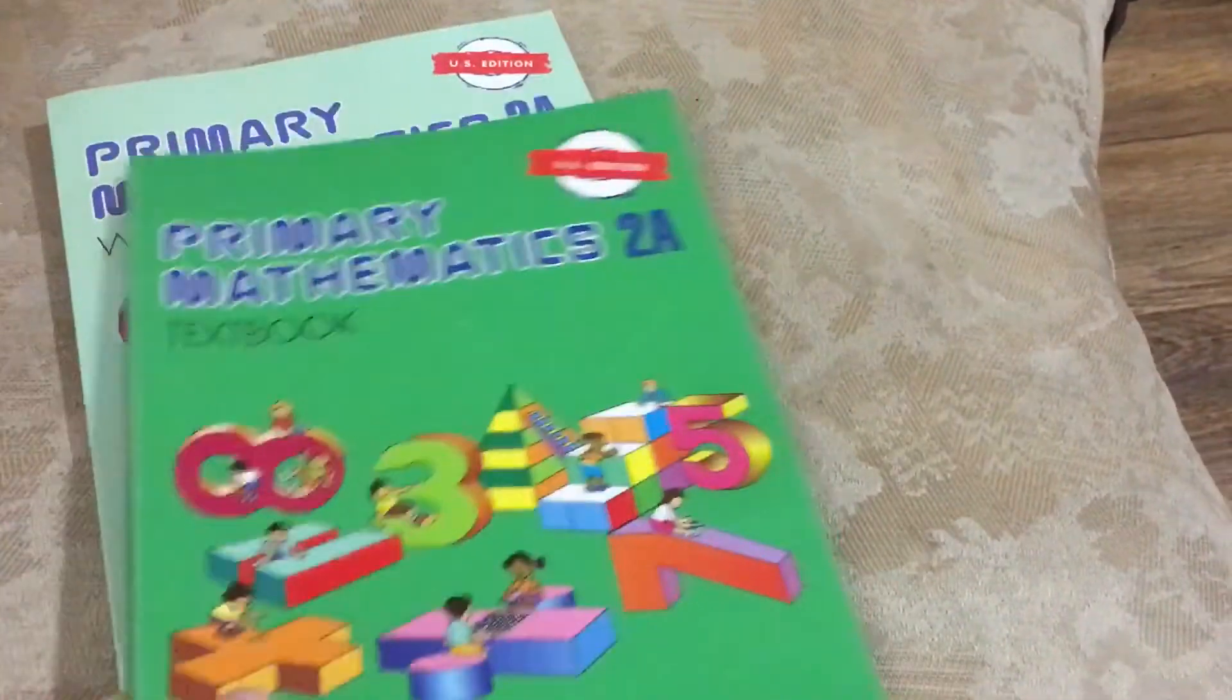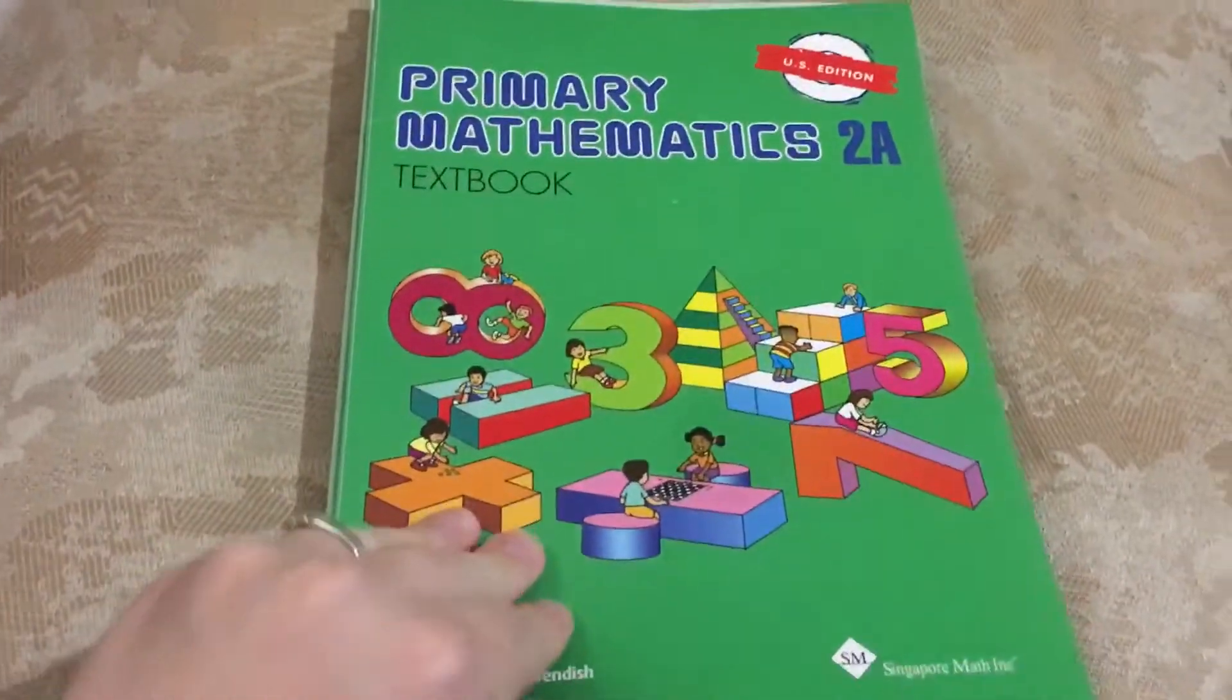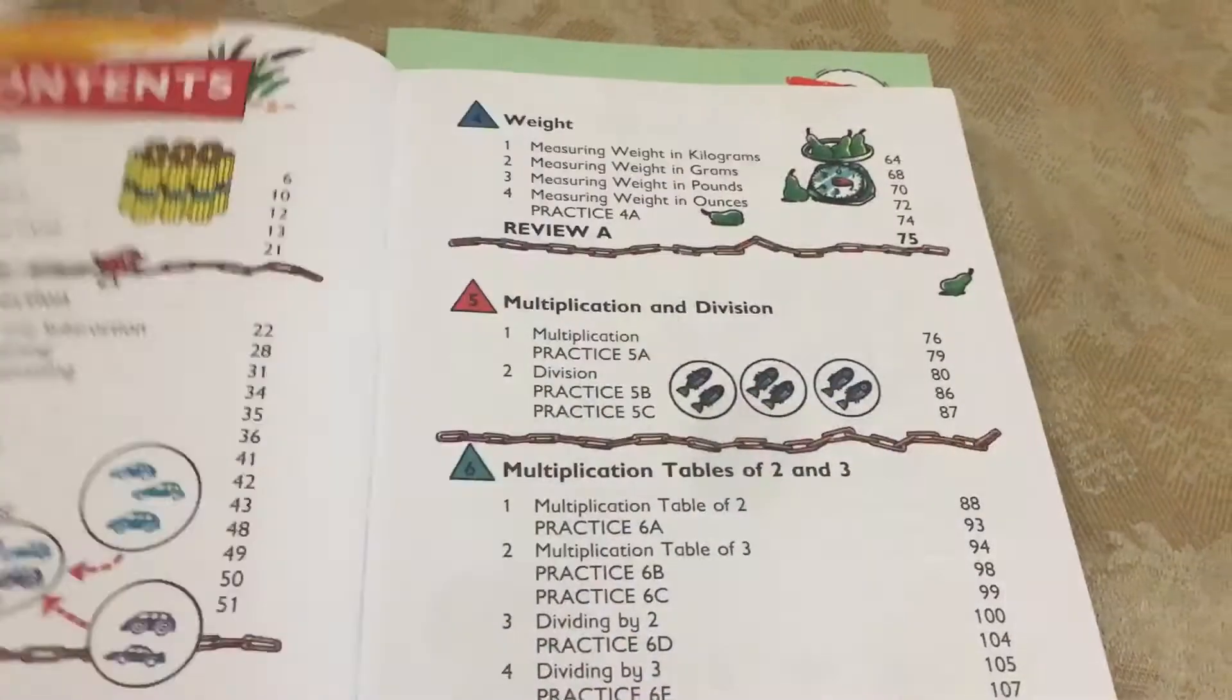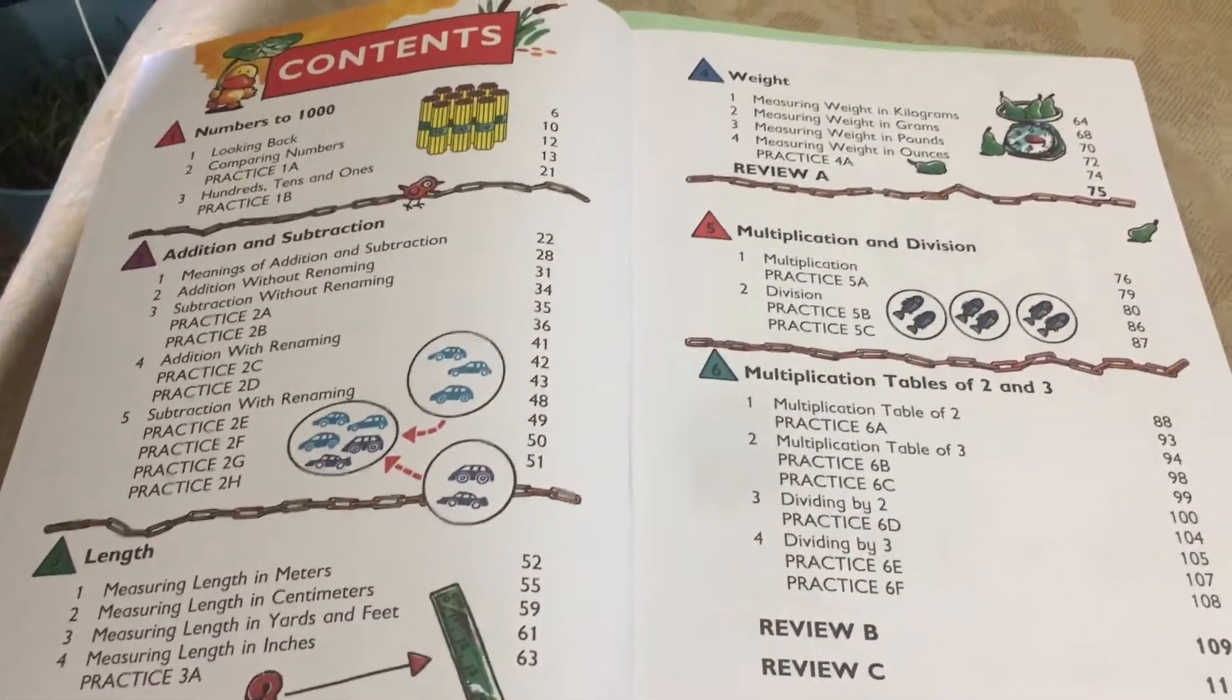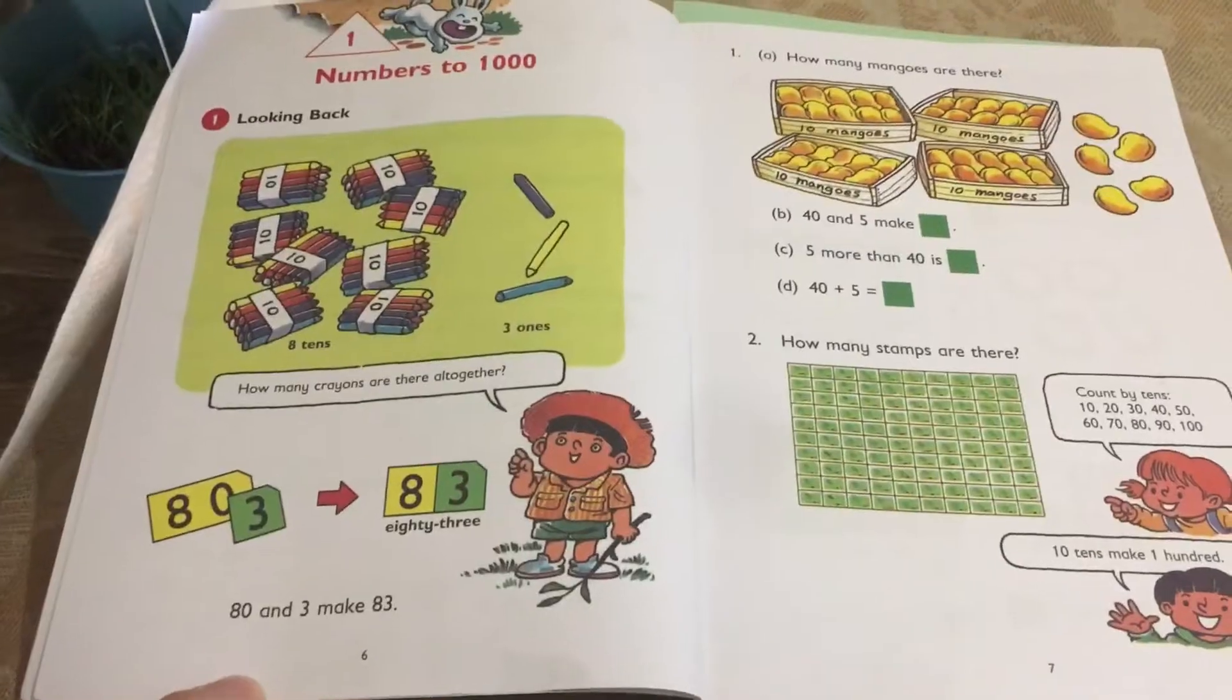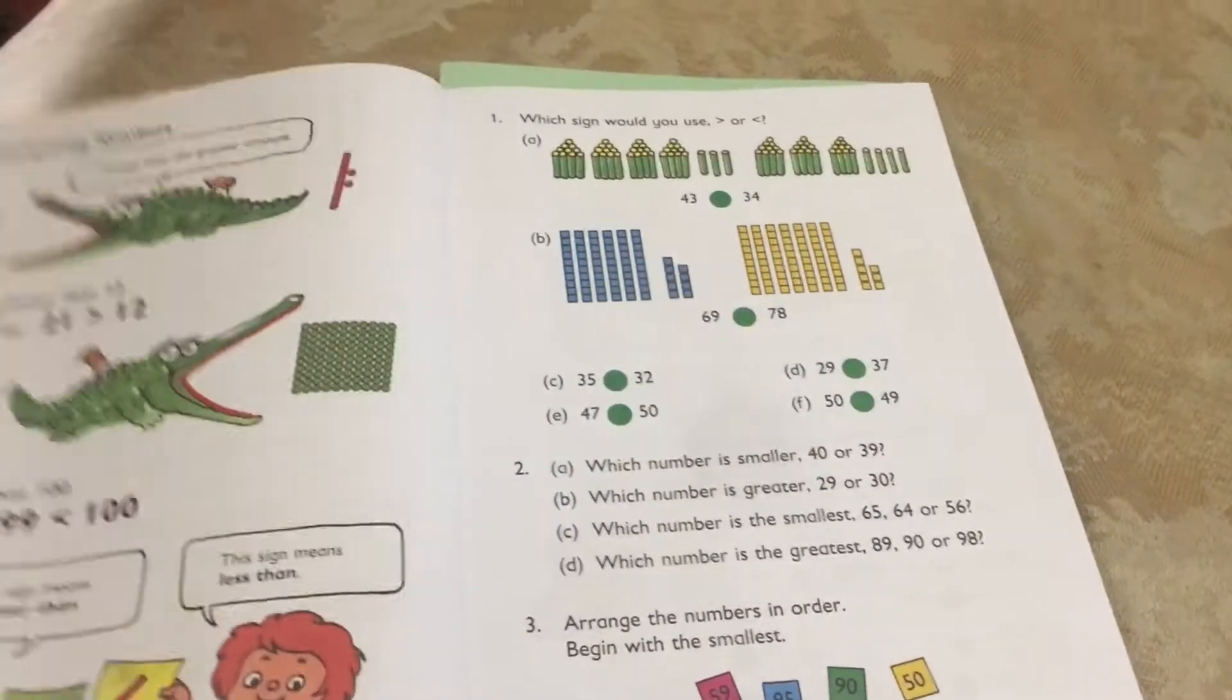So now I'm going to go and do a flip through of the textbook for 2A. Here's your preface. You can slow this down or speed it up however you would like. Here's your table of contents. That's your first lesson. There starts your second.